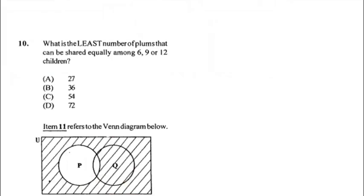Number ten: the least number of plums that can be shared equally among 6, 9, or 12 children. We're looking for the LCM — the least common multiple for all these numbers. Write out the multiples for 6, 9, and 12 and find the smallest number that appears in all three lists. That number is 36, which is the least common multiple.